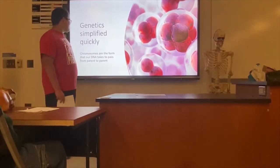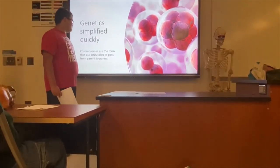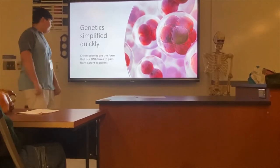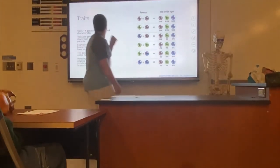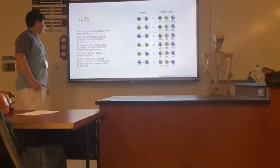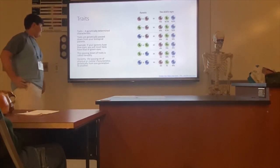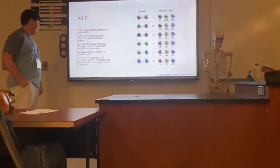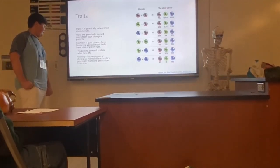Genetics simplified. Chromosomes are the form that our DNA takes to pass from parent to child. Traits are a genetically determined characteristic, passed down from biological parents. For example, if your parents have blue eyes, you will likely have blue or green eyes. This passing down of traits is called heredity — heredity is passing down physical or mental characteristics genetically from one generation to another.